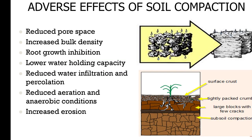Soil compaction reduces pore space and increases bulk density, which we'll measure in a lab in a couple of weeks. It causes root growth inhibition, low water-holding capacity because water can't actually get into the soil, reduced water infiltration and percolation, reduced aeration and anaerobic conditions — which of course is not good for roots — and increased erosion. It's almost like when water hits the topsoil, it just rolls right off.